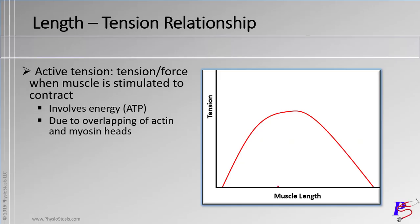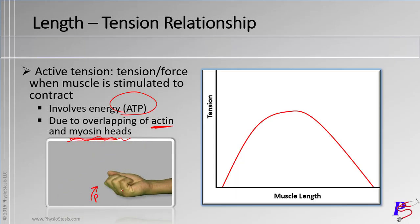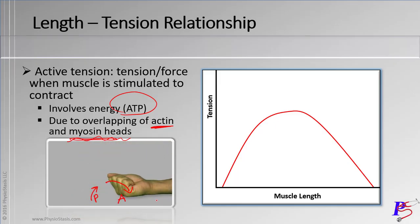Moving on to active tension. Active tension involves energy — it involves ATP being used with the interaction of actin and myosin. The ATP bound to the myosin head. Go back and review the cross-bridge cycle to see where ATP interacts with the myosin head. Going back to our example of the hand: the fingers stretching and coming back is the passive tension, but then as I make a fist and come in more, that would be the active tension.